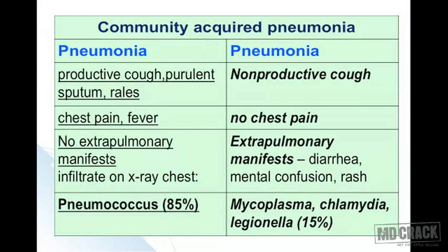Regarding community-acquired pneumonia: productive cough with purulent sputum, rales, chest pain, fever, and chest X-ray infiltrate without extra-pulmonary manifestations suggests pneumococcal infection — accounting for 85% of CAP cases. On the other hand, non-productive cough, no chest pain, and extra-pulmonary manifestations like diarrhea, mental confusion, and rash suggest atypical organisms — mycoplasma, chlamydia, or legionella — accounting for approximately 15% of cases.